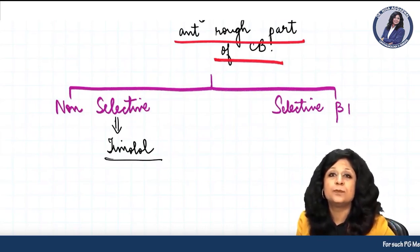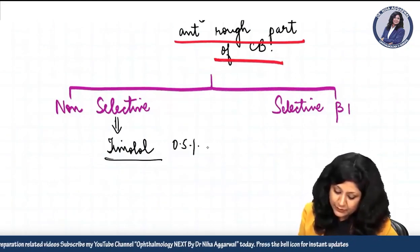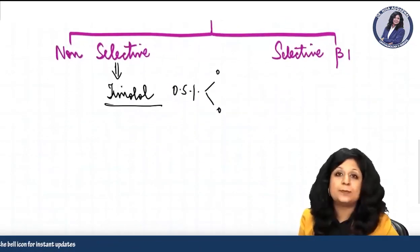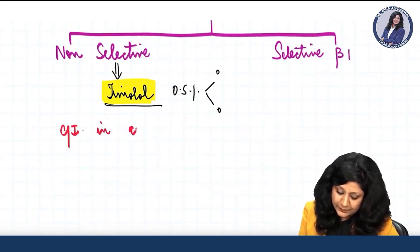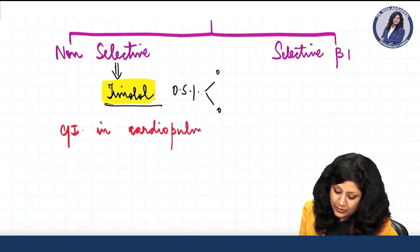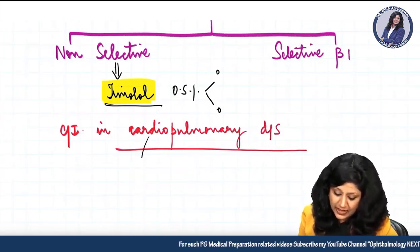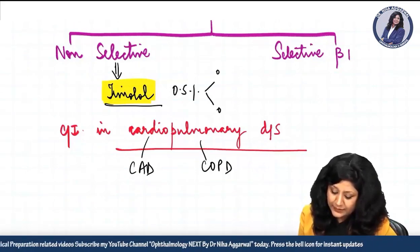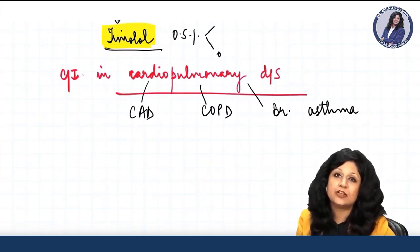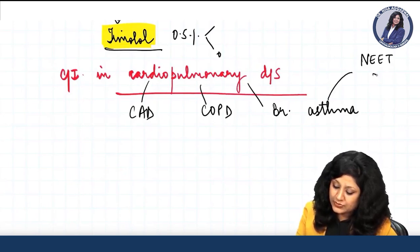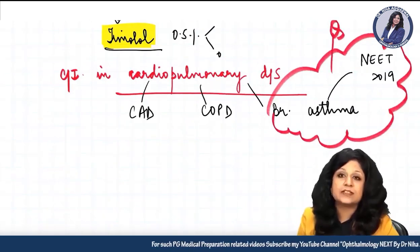Timolol is the most popular non-selective beta blocker used for glaucoma. It is a 0.5% drug used conveniently twice daily. However, timolol is contraindicated in cardiopulmonary diseases — including coronary artery disease, COPD, and bronchial asthma. This question came in NEET 2019: which anti-glaucoma drug is contraindicated in patients with bronchial asthma? The answer is non-selective beta blockers.